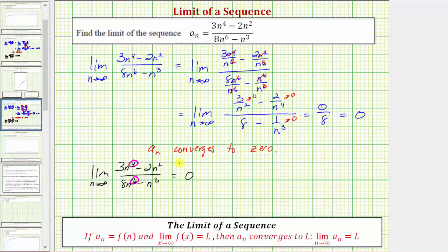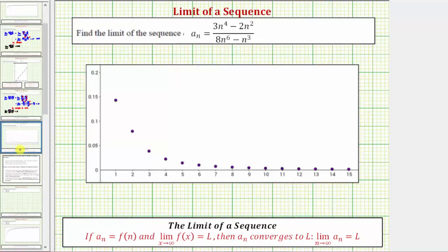Let's look at the sequence graphically. Each point on the graph represents one term in the sequence, where n is along the horizontal axis and a sub n is along the vertical axis. Notice that as we generate more and more terms using the formula a sub n, the terms are approaching a value of zero. Therefore, a sub n converges to zero. I hope you found this helpful.